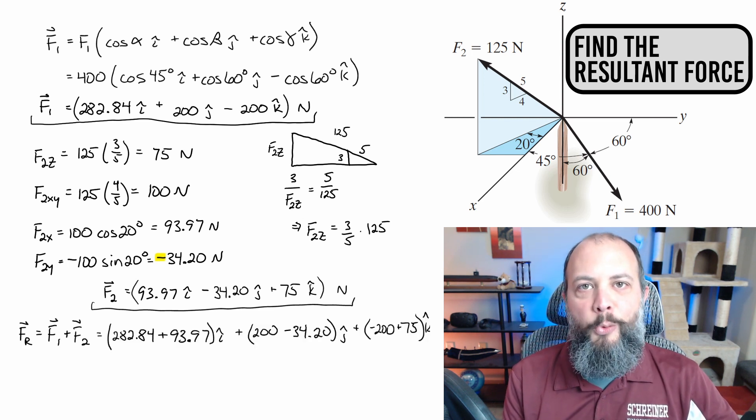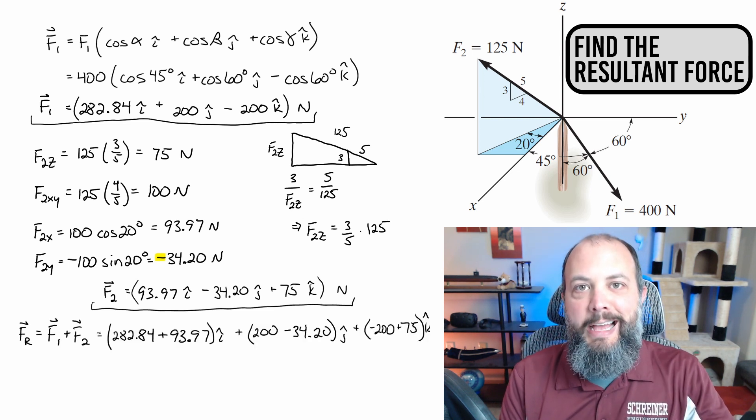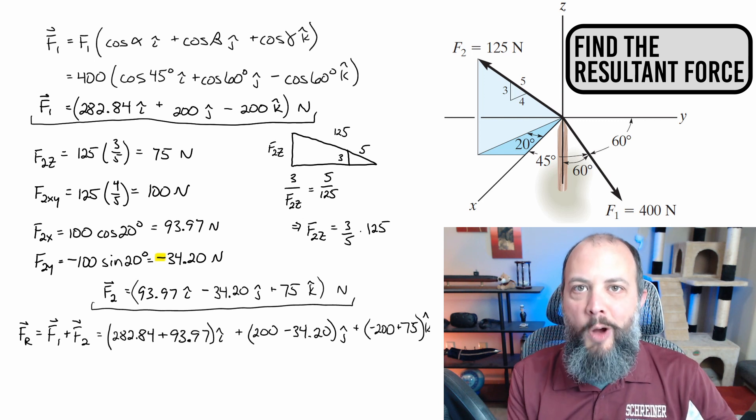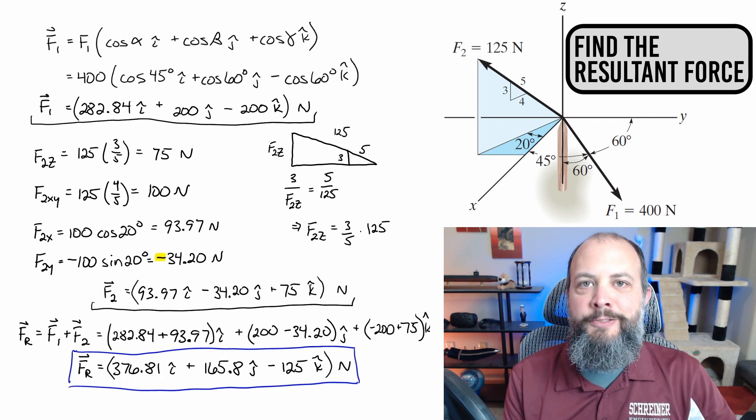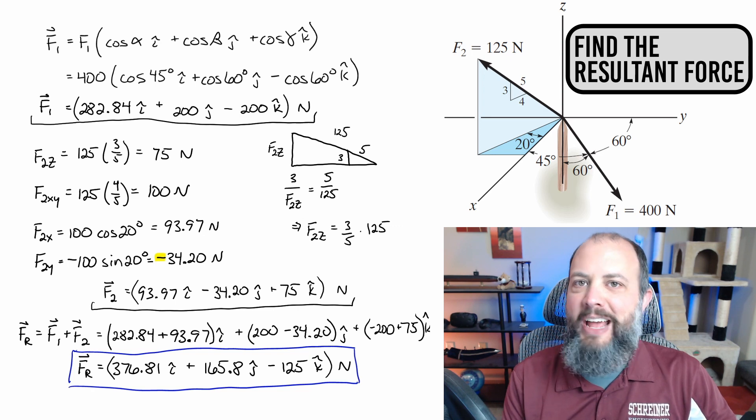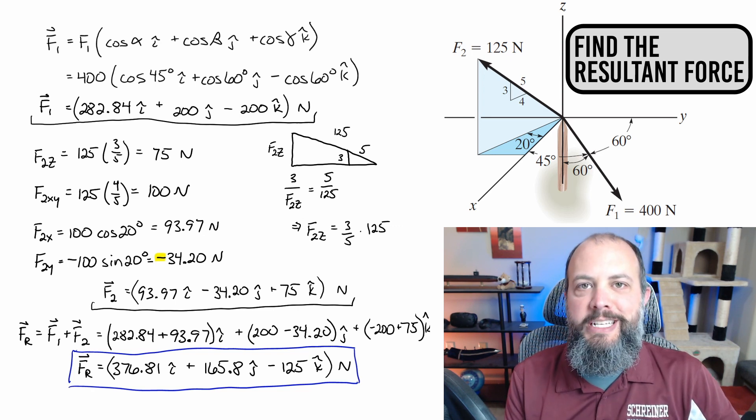You then find the resultant force of these two vectors by adding the X components together, separately adding the Y components and separately adding the Z components. And that gives you the final resultant force of adding F1 plus F2 in Cartesian form.